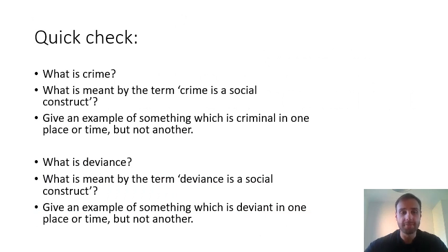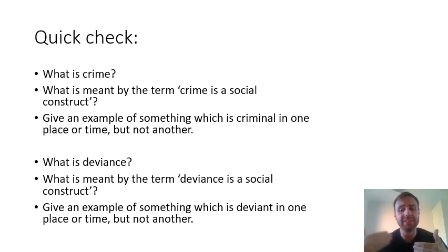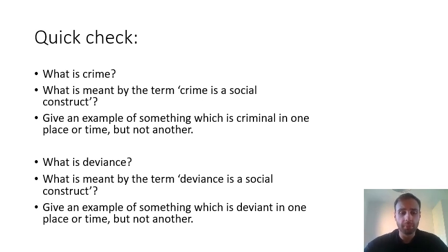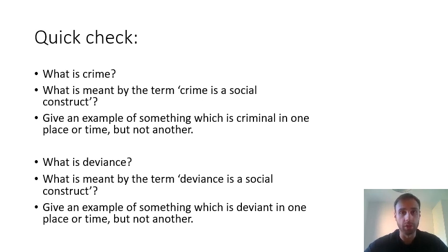So we've looked at the first three questions, and hopefully you've paused the video to go over them. Now have a look at the bottom three: What is deviance? What is meant by the term 'deviance is a social construct'? How is deviance different to crime — remember, not all acts that are deviant are criminal. And can you give me an example of something which is deviant in one place or one time but not in another? Try to think of something I haven't already given as an example.